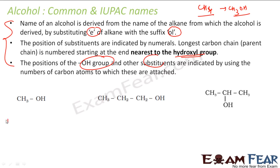Let's write the IUPAC name for this. This compound is from methane. So instead of '-e' you make it '-ol', and it becomes methanol.